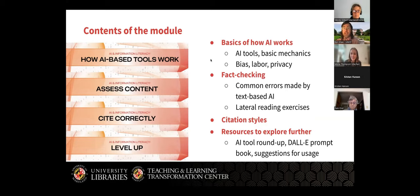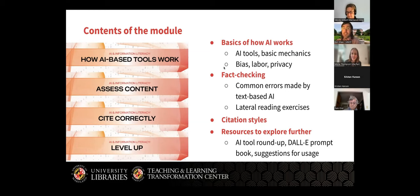Next, we had a module on how to assess content — a fact-checking section pointing out common errors made by text-based AI in particular, and looking at lateral reading exercises. We had been getting a lot of questions about how and whether to cite AI in academic assignments, so we had a page on citing correctly. And then we had what we termed a level up page, which were resources to explore further — tools, the DALL-E prompt book, suggestions for ways you could use them. I'm going to dive a little bit more into each of these sections.